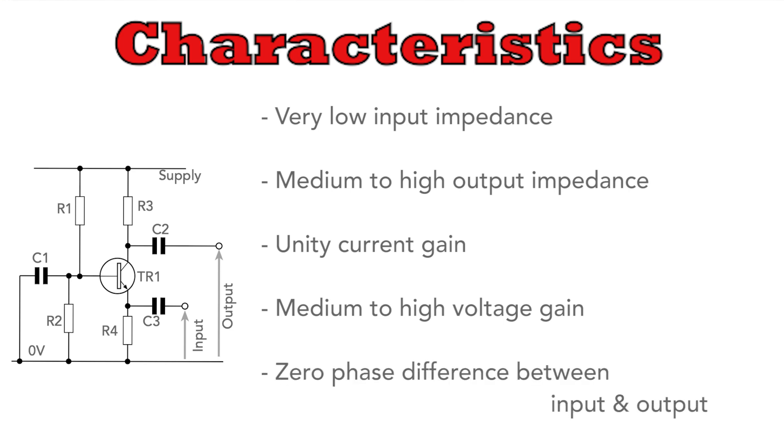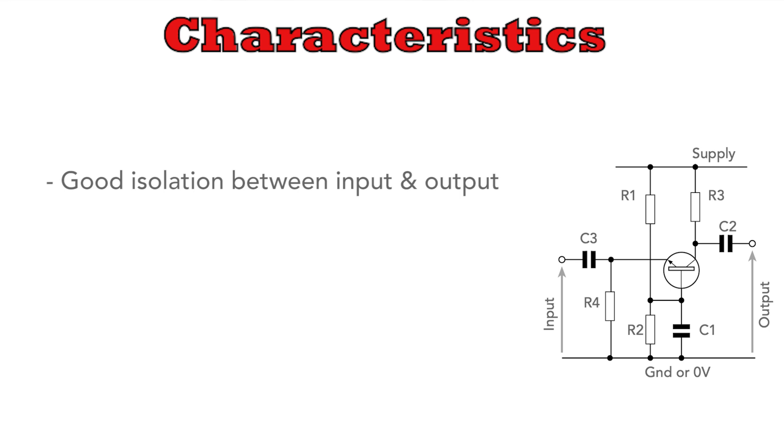Then, the phase difference between the input and output is zero, again because of the common current flowing through the emitter and collector. Finally, the fact that the base is grounded means that this circuit has good isolation between the input and output, a fact that can be very helpful for RF amplifiers where feedback can cause the amplifiers to oscillate.